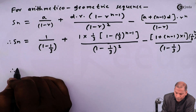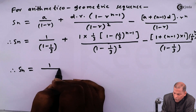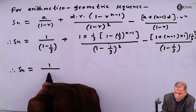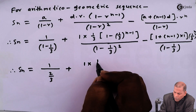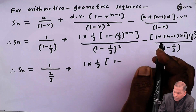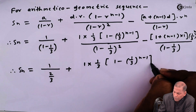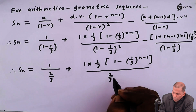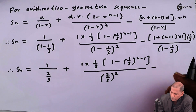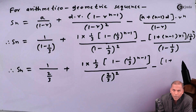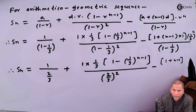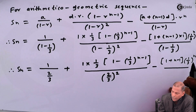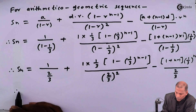The next step: in the denominator, 1 − 1/3 = 2/3. So the first term becomes 1 ÷ (2/3) = 3/2. The second denominator (2/3)² = 4/9, and the last denominator 1 − 1/3 = 2/3, giving 3/2 in the numerator. So S_n = 3/2 + (1/3)·[1 − (1/3)^(n−1)] / (4/9) − n·(1/3)^n / (2/3).